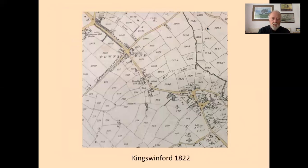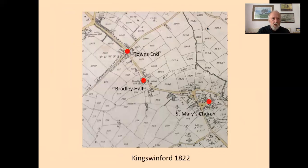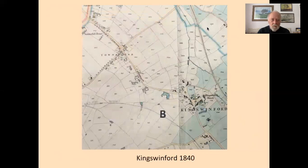Looking at King Swinford in 1822 — remembering north is to the top right — we can see King Swinford church (St Mary's) and the Dudley–King Swinford road going through it, passing through the crossroads at Townsend on the Wolverhampton–Stourbridge road. We can also see Bradley Hall and Summerhill House, with the Dawley Brook running to the north of King Swinford church. Overall it is a very rural, agrarian situation.